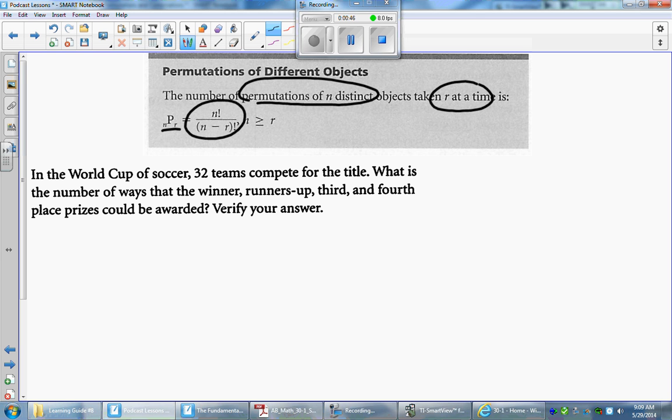So we're going to use this formula here for this question here. It says that in the World Cup of Soccer, 32 teams compete for the title. What is the number of ways that the winner, runner-up, third and fourth place prizes could be awarded? And then we want to verify our answers here.